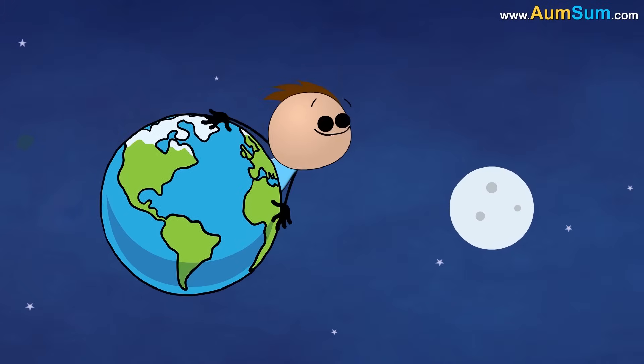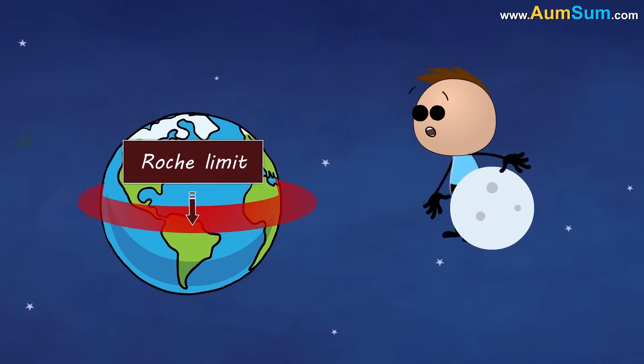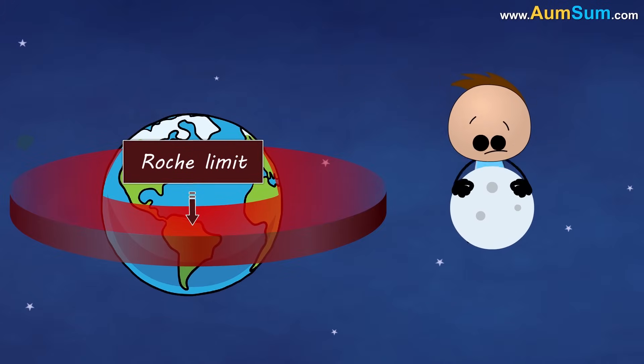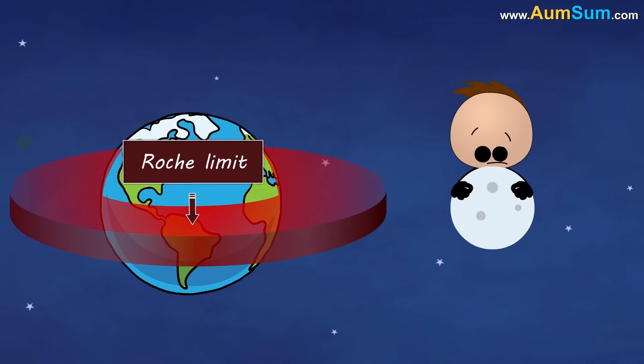Now, Earth also has a moon. But since it is beyond the Roche limit, it doesn't get ripped apart into pieces to form rings.